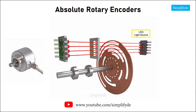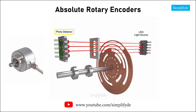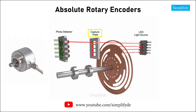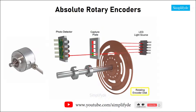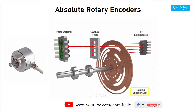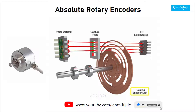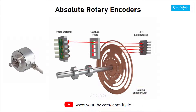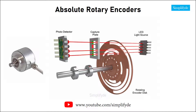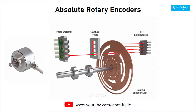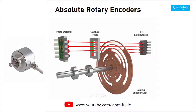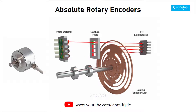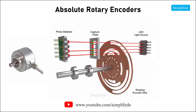A light source located on the opposite side of the photocells passes light through a capture plate. As the encoder disk rotates, light is either transmitted or blocked according to the pattern. The received light provides a four-bit word that indicates the position of the actuator or device the encoder is mounted to.